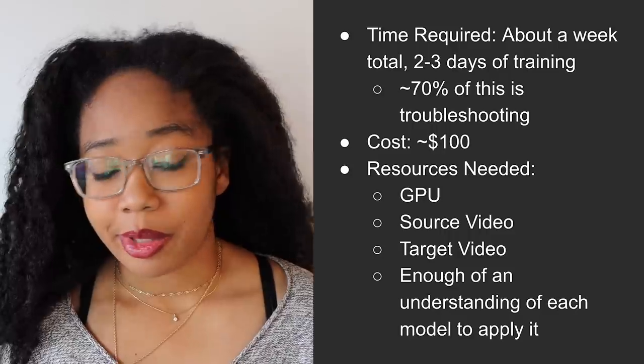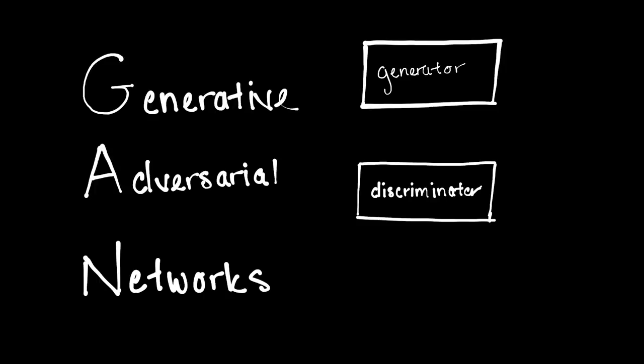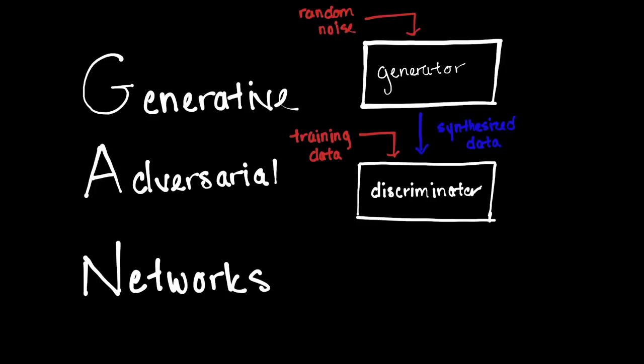For those with a decent technical background or willingness to learn, generating deepfakes is fairly straightforward. In most cases, synthetic media can be generated using models called generative adversarial networks, or GANs, which pit two models against each other. On one side we have the generator model, which wants to create synthetic data that is essentially indistinguishable from real data. On the other side we have the discriminator model, which wants to accurately predict whether any given piece of data is synthesized or real. As the two models go back and forth, the generator learns to create increasingly realistic data, and the discriminator learns to find increasingly subtle differences. Once you decide your generator is good enough, you can use it to create synthetic data in the form of audio, video, or images.